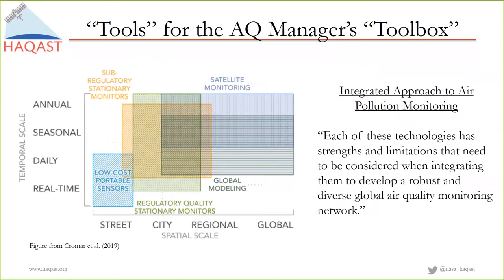My goal is to convince you that you can use satellite data and global air quality forecast models in addition to low-cost portable sensors and regulatory quality stationary monitors to monitor air pollution in a more comprehensive way. I'm promoting an integrated approach to air pollution monitoring. Each technology has strengths and limitations that need to be considered. Low-cost portable sensors give you street-level, near-real-time information, while satellite data give you long-term trends. Some people dismiss low-cost sensors as junk, but the technology may improve greatly over the next 10 years.